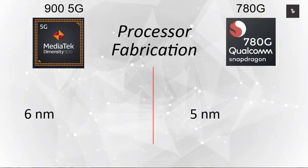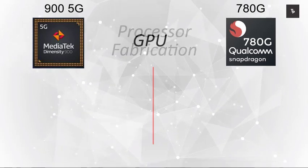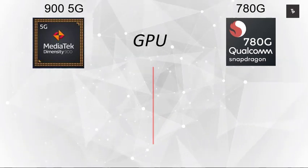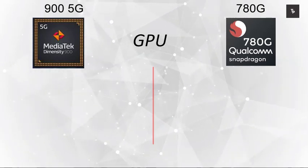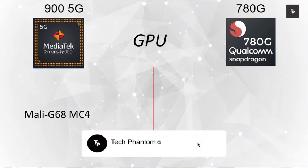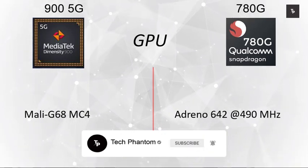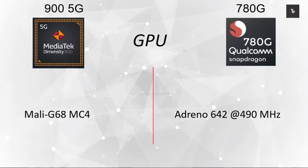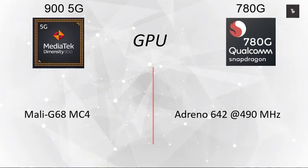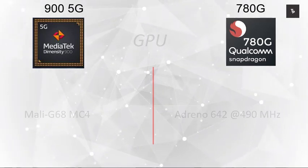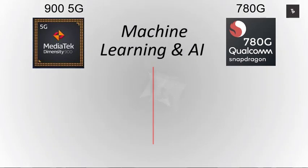Moving on to the GPU, which is mainly relevant for gaming and task-intensive workloads: the Dimensity 900 comes with the Mali-G68 MC4, and the Snapdragon 780G comes with the Adreno 642 at 490 MHz.